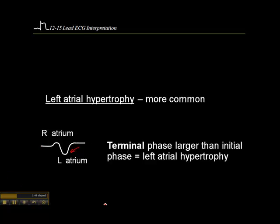Oftentimes when you look at V1 or MCL1, you'll simply see a biphasic P wave and you'll have to squint to see which is larger — the initial phase or the terminal phase. This is not information I would document on your patient care report, nor something I would report to the triage nurse. Even ventricular hypertrophy is more for your interest only — knowledge that helps you determine this may be a patient with a history of heart failure where the patient isn't able to tell you that or doesn't have medication to suggest it. This is more FYI than anything else.